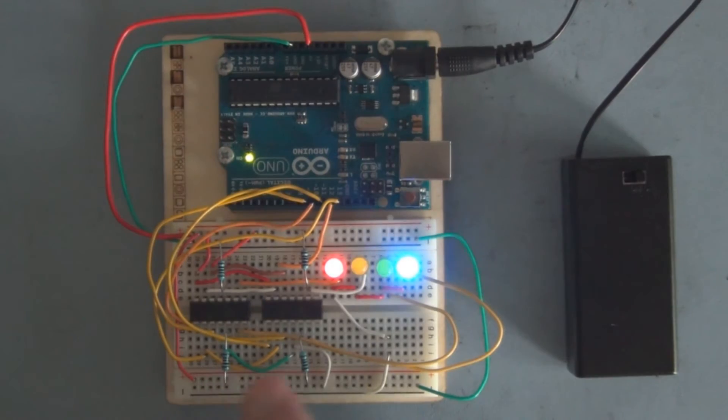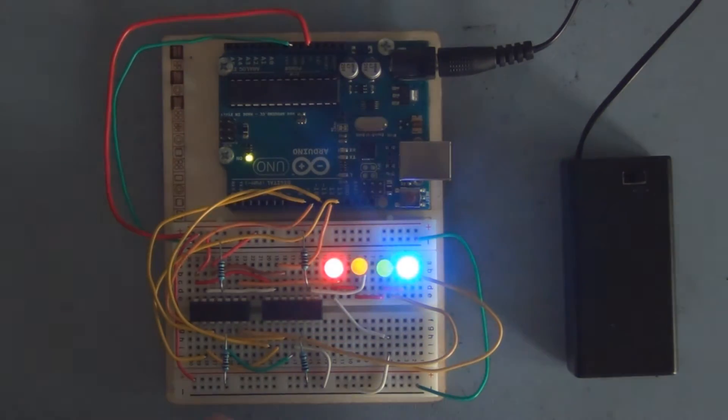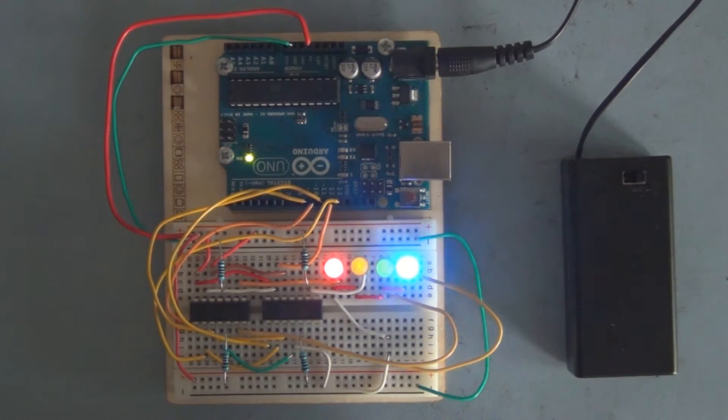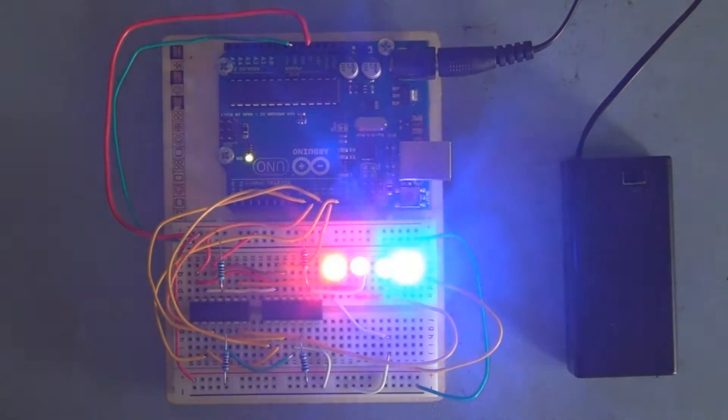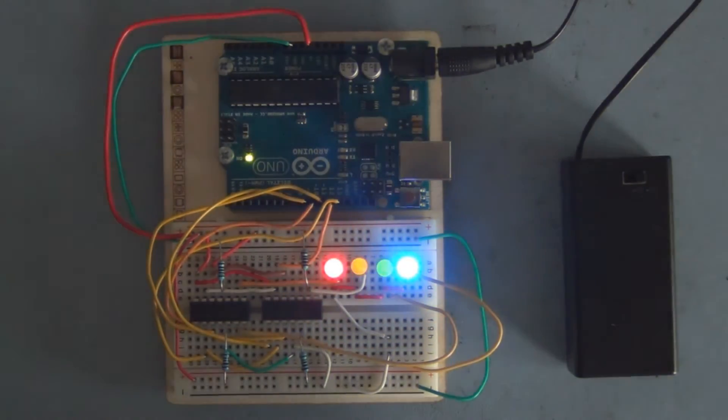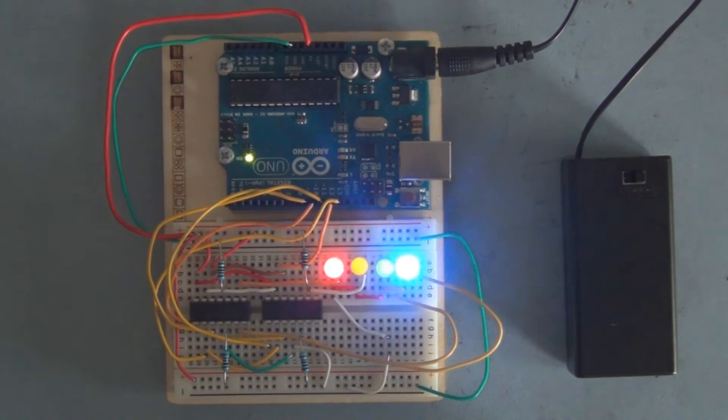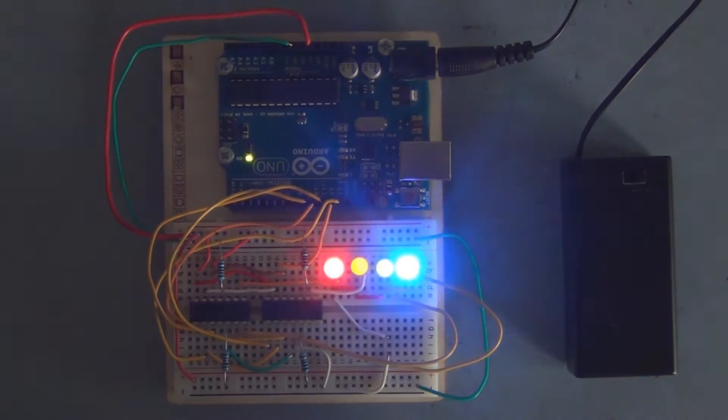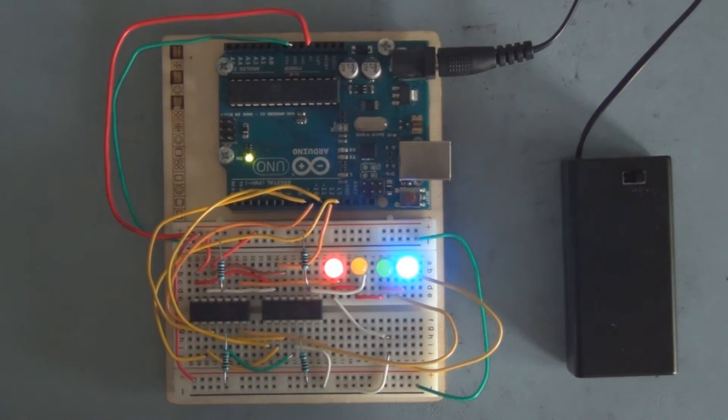Because we have two chips, we're going to have two slave select or chip select lines. Depending on which one is low, that's the particular chip we'll be able to write data to. Each chip has two potentiometers, so each chip has to have the correct address to control each individual potentiometer. Since there's only two, one has an address of zero and one has an address of one.